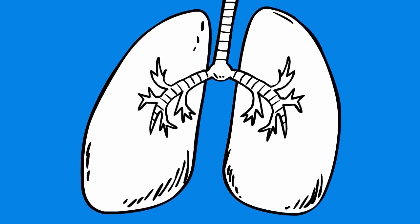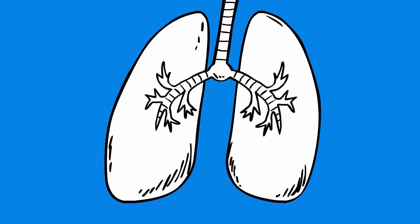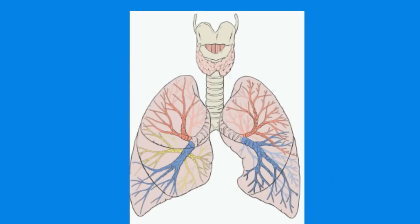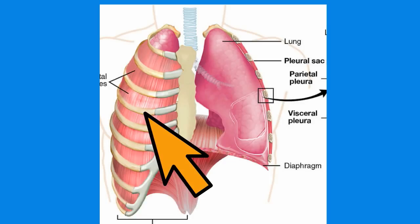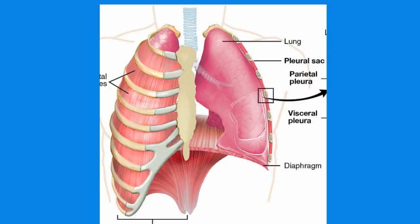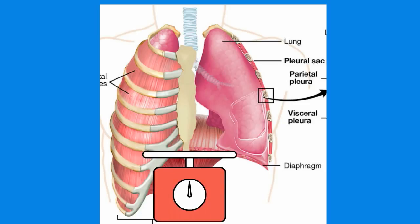You have two lungs — a left and a right lung — and they are located beside your heart. Your heart pumps blood to the lungs where oxygen is exchanged for carbon dioxide. Your right lung is larger than your left lung, and your lungs weigh around 3 lbs.